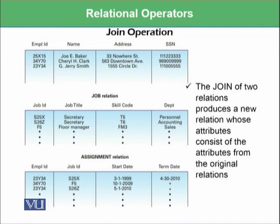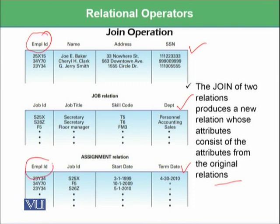There is another operation known as join operation. The join operation tries to join different relations — two or more relations — producing a new relation whose attributes consist of the attributes from the original relations. For example, you can join all three relations using attributes that are common across the tables, such as employee ID or job ID, to get meaningful information.